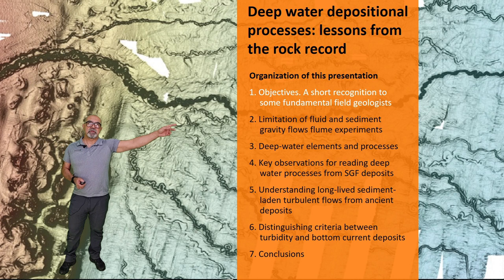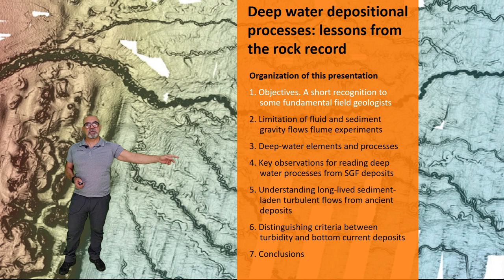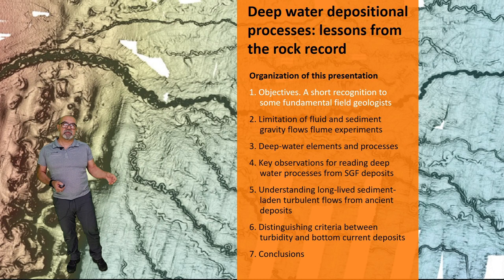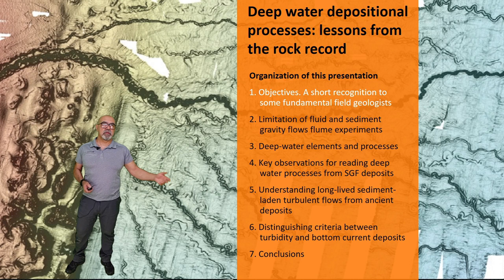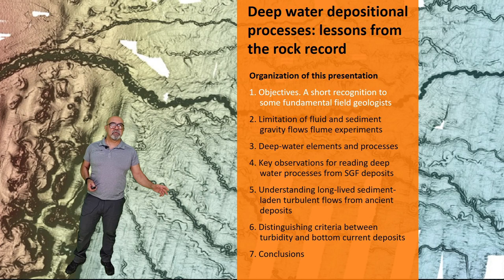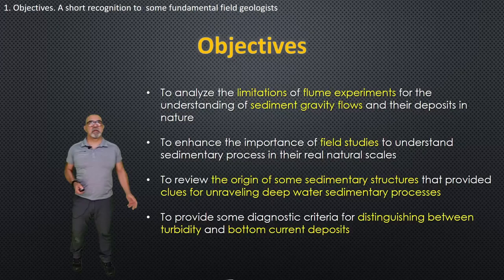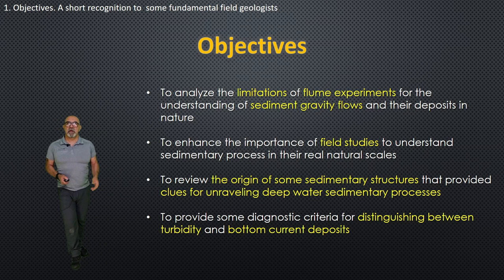This is the main organization of this presentation. We are going to move from objectives, discussion of fluid and sedimentary gravity flow, deep water elements and processes, key observations for reading deep water processes from the deposits and the rock, to understand the characteristics of long-lived and fluctuating sediment-laden turbulent flow from deposits, to discuss criteria of distinction between turbidity current and bottom current deposits, and then the conclusion.